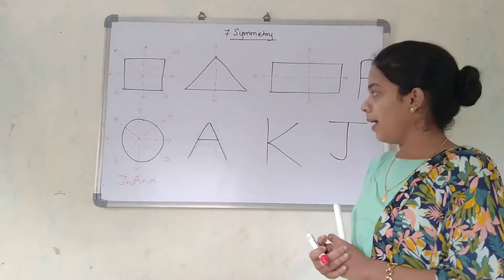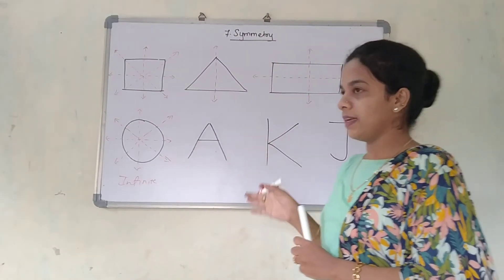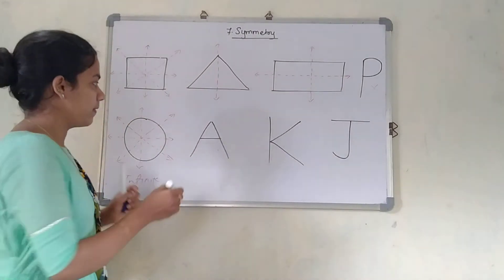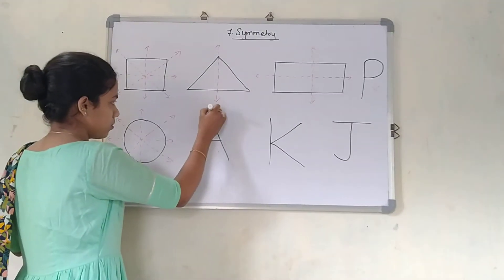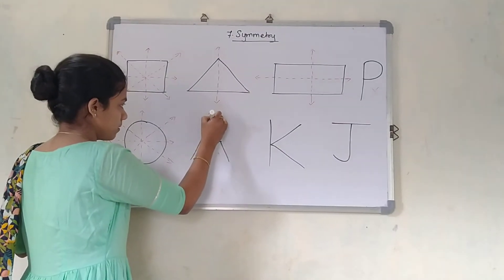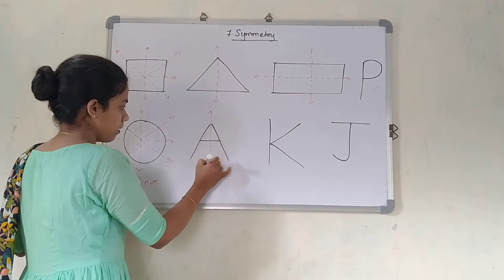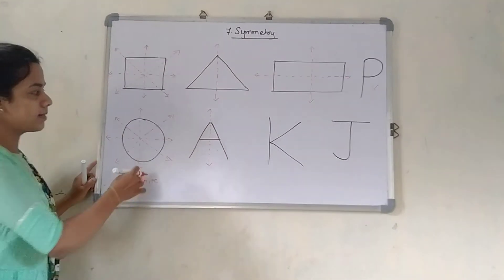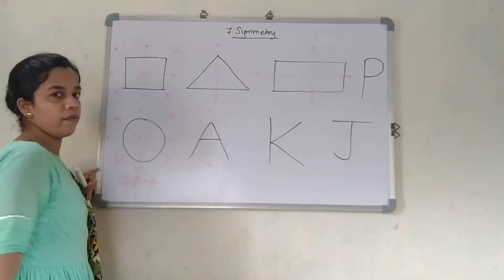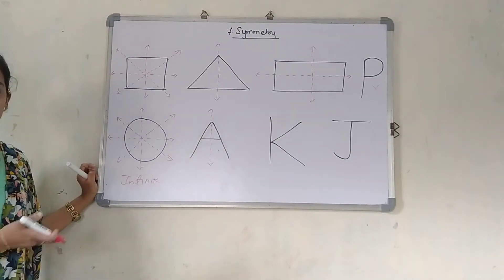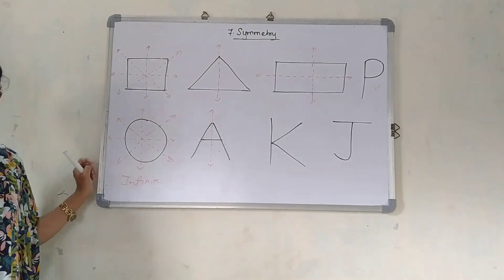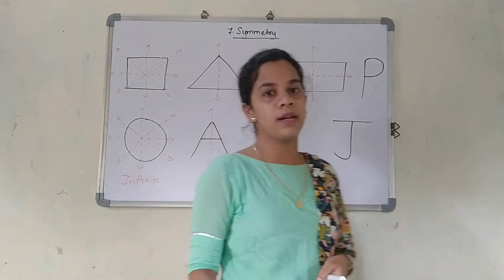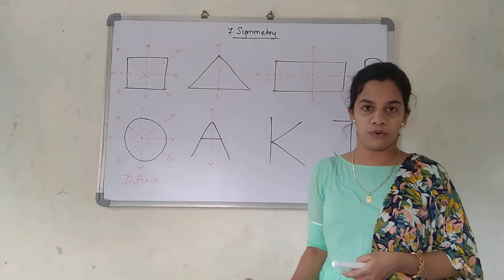Now A. Yes, it is a symmetrical object. Why? Because we can draw an axis of symmetry like this — vertically. Can I draw the axis of symmetry horizontally? No, I cannot do it, because at that time it will not be a symmetrical object.